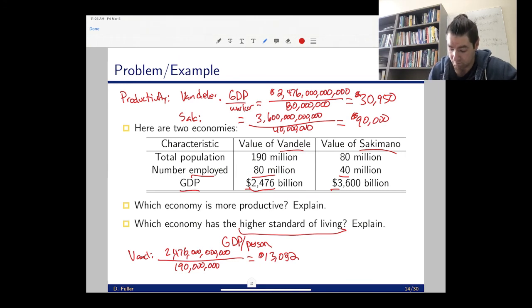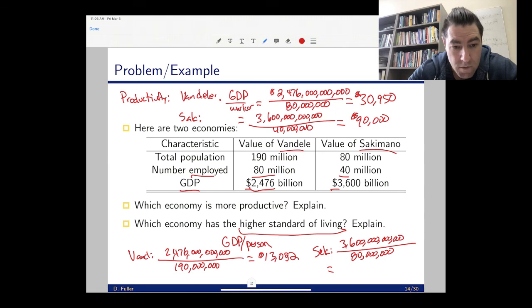For Sacamano, their GDP per person to measure standard of living - their population is 80 million - and so we get $45,000. In this case, it worked out that the more productive country also has the higher standard of living. That won't necessarily be the case.